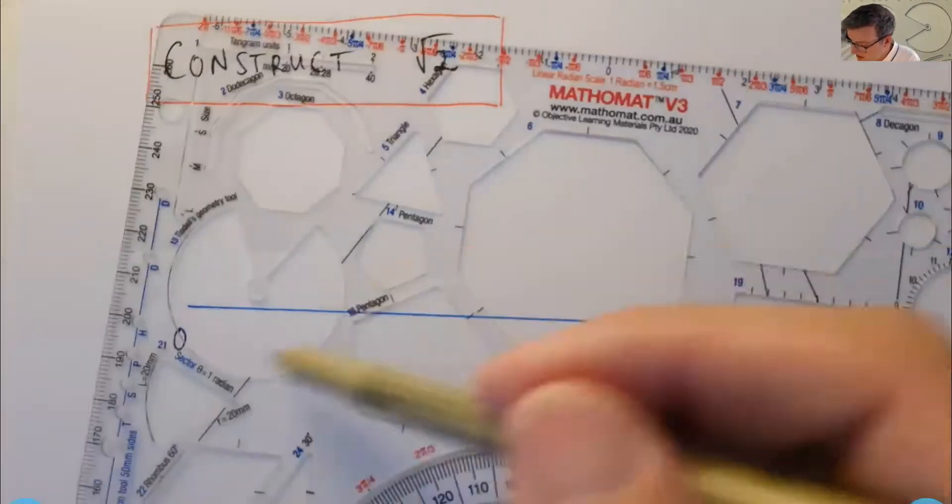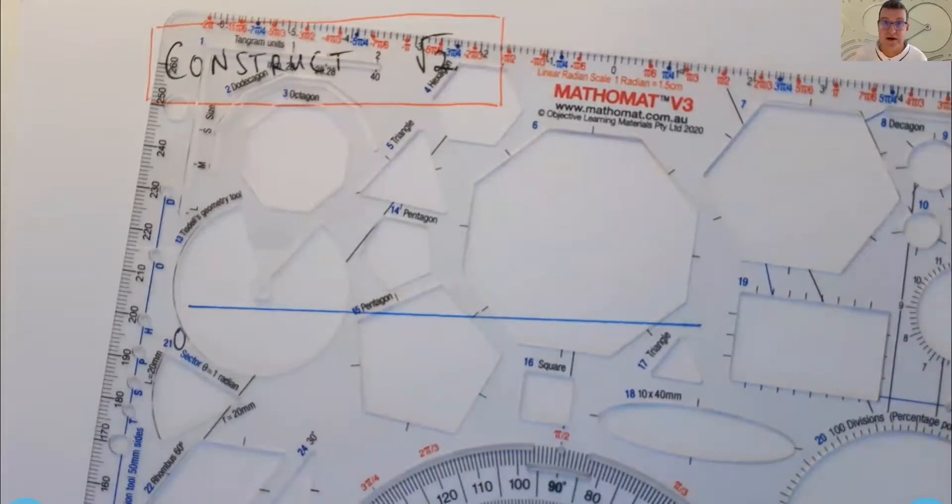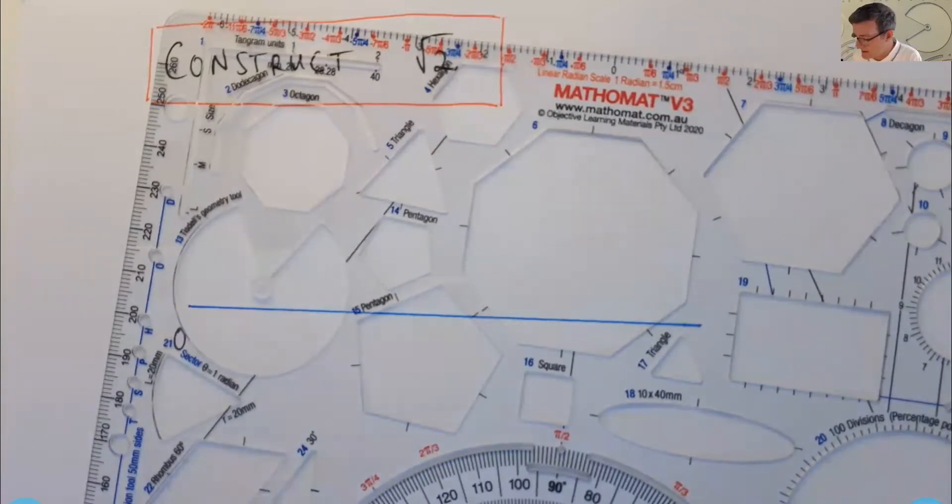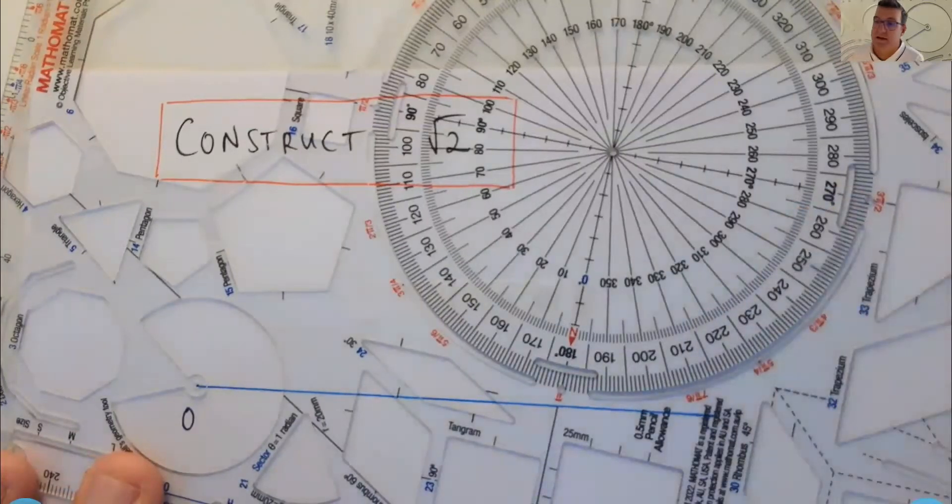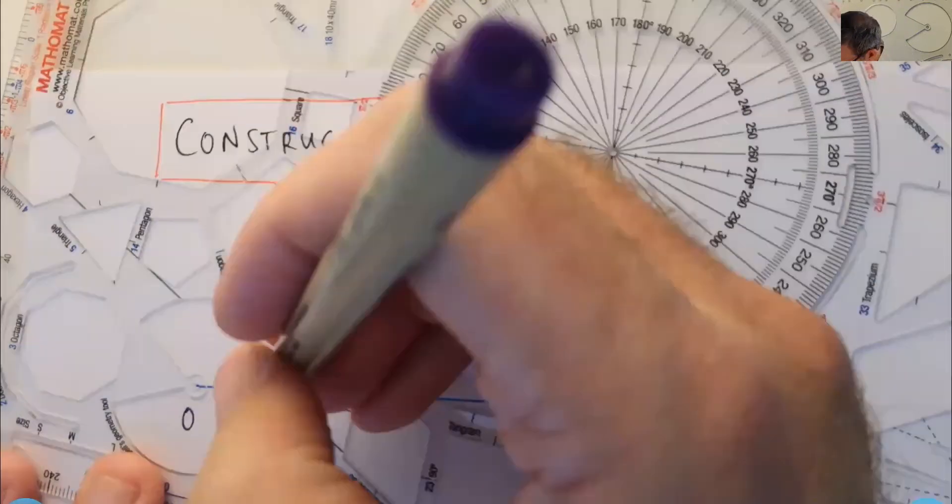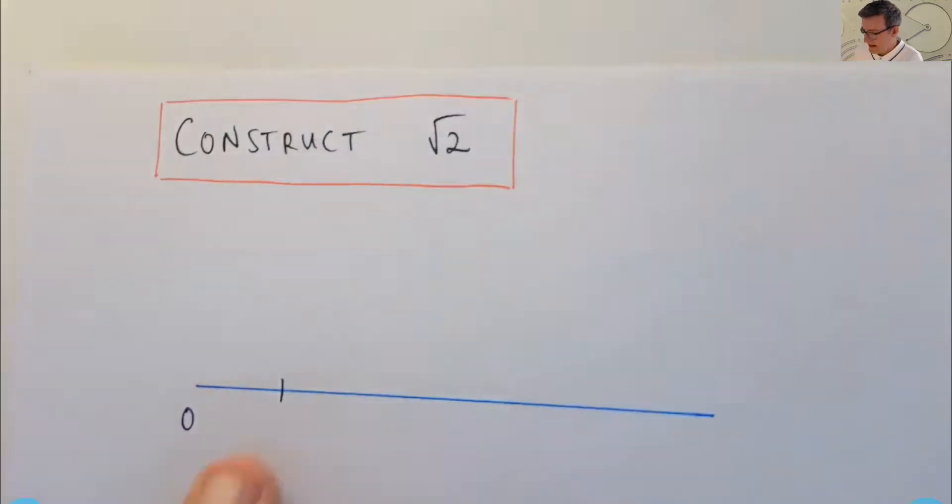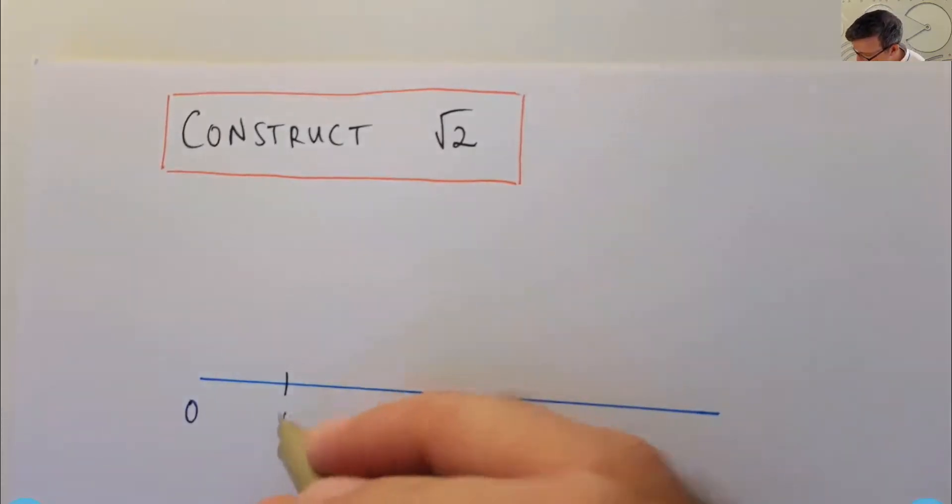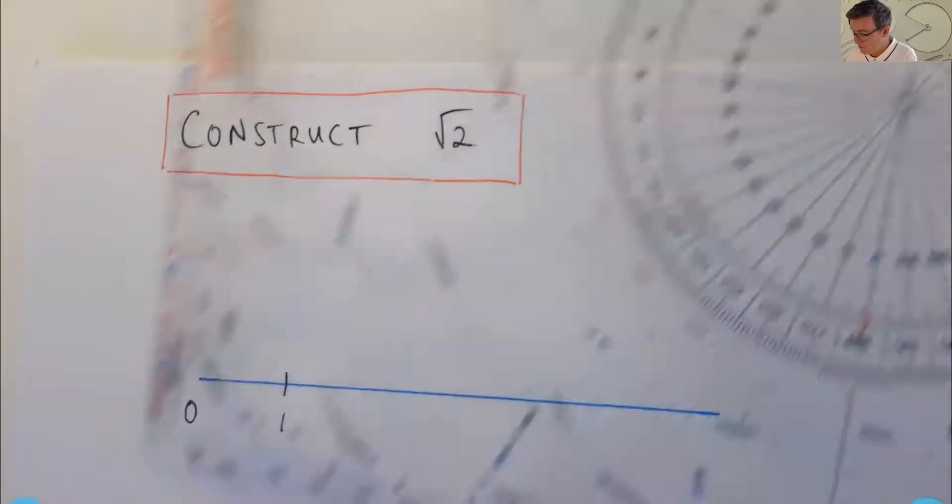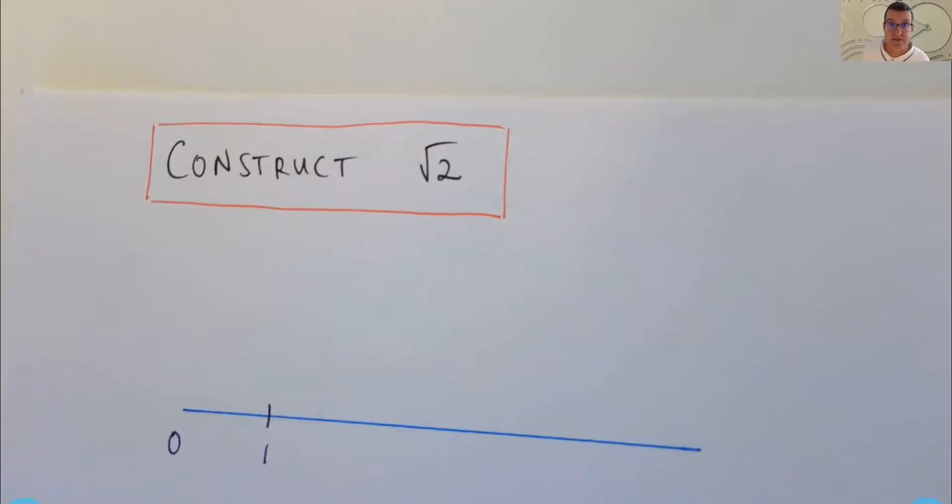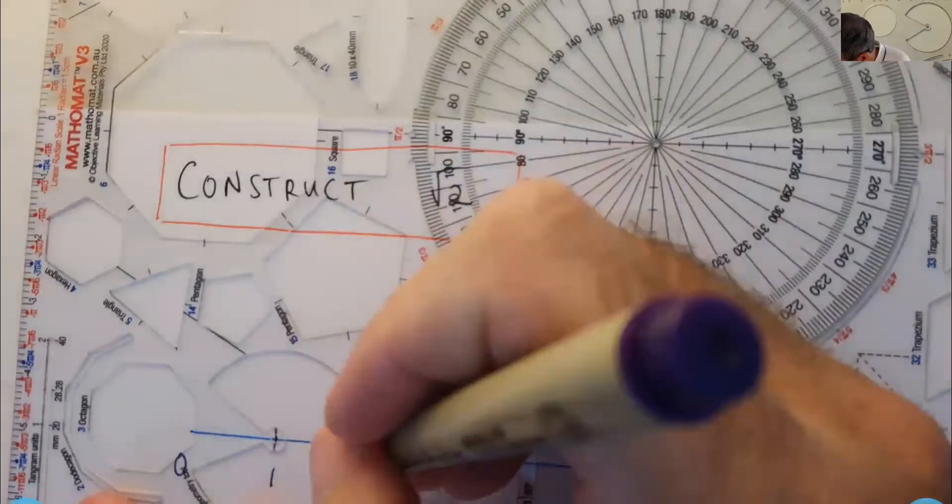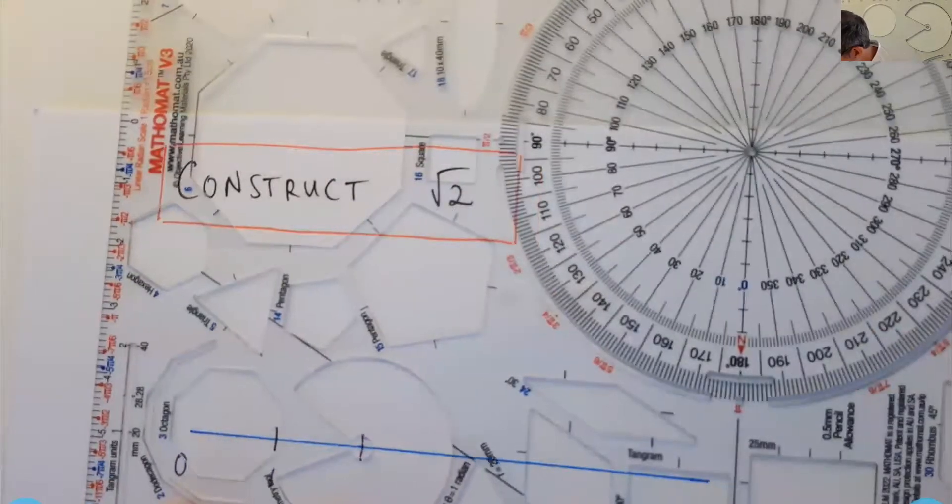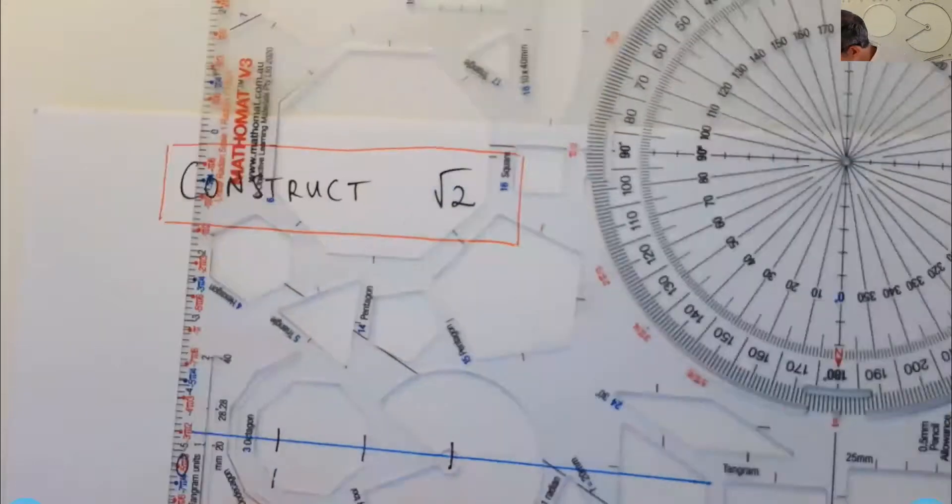Now, this is a slightly smaller circle arc template than my previous videos. I just want to make sure I can fit everything in. But the size of the circle arc template does not matter. So I'm going to start by placing the center of my circle arc template at zero. And you can see it's going to cut the axis at one point. Now, the distance from here to here, which is incidentally the radius of my circle arc template, that's going to be the unit length.